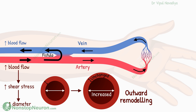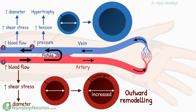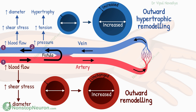The artery experiences only one change — an increase in blood flow. But the vein experiences two changes: in addition to the increase in blood flow, it is also exposed to higher pressure, because high-pressure blood from the artery is directly entering the vein. The pressure increases tension, which causes hypertrophy. This combined with the increase in diameter gives an overall picture: increased flow causes outward remodeling and increased tension causes hypertrophic remodeling. So we have a combo here called outward hypertrophic remodeling.